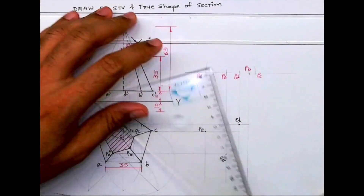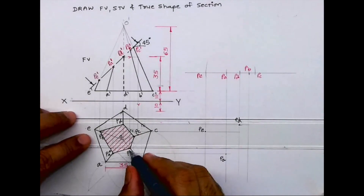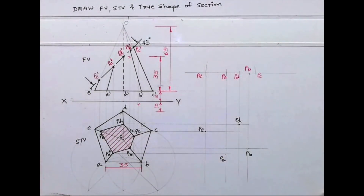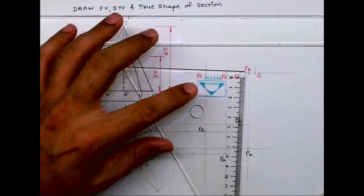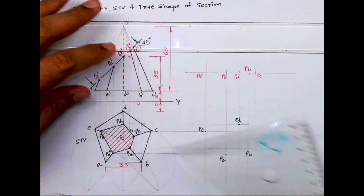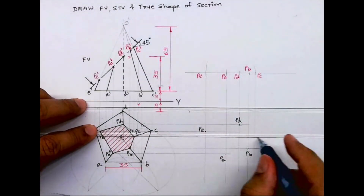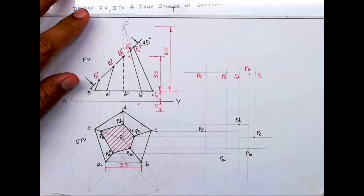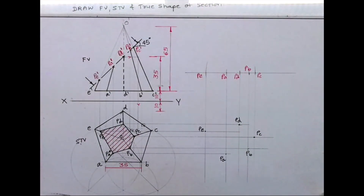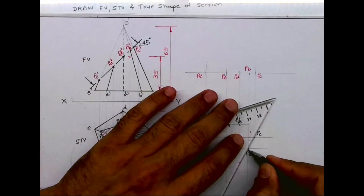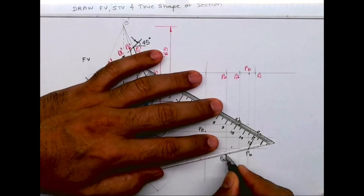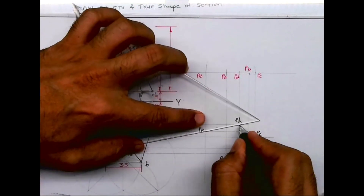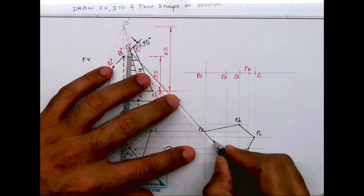Same way, project PB from the front view and PB from the top view. Now join all these points and you'll get the true sectional shape — we can write TSS.